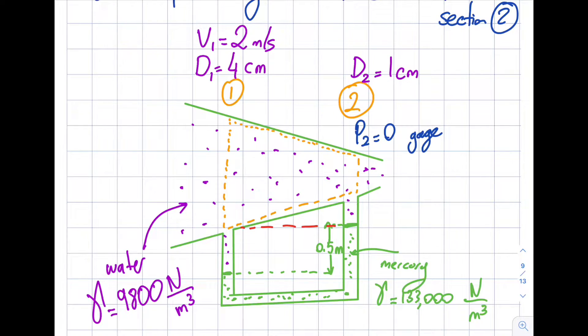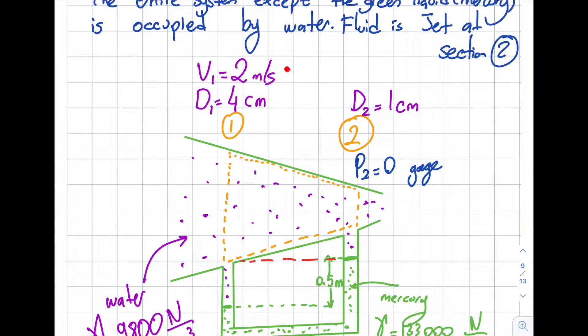So that is the height of the mercury column and the specific weight of mercury is given. Specific weight of water is given as well. And in here I gave myself V1 and D1, so the properties for section 1 is known. Section 2, I gave myself D2, but I don't know the V2.